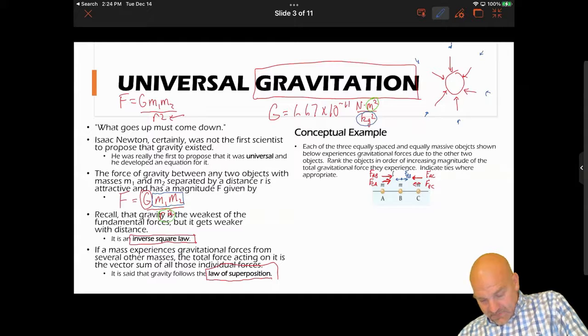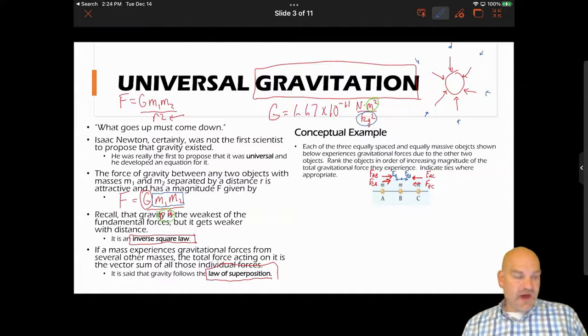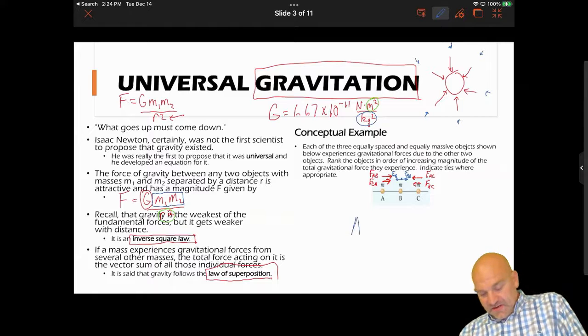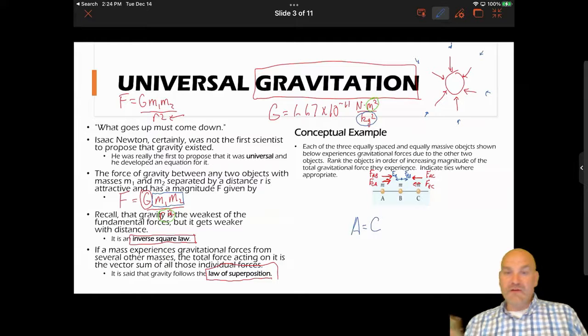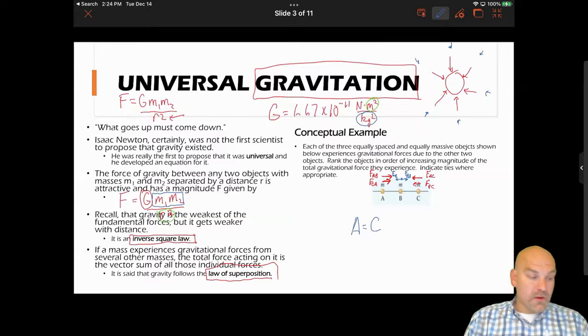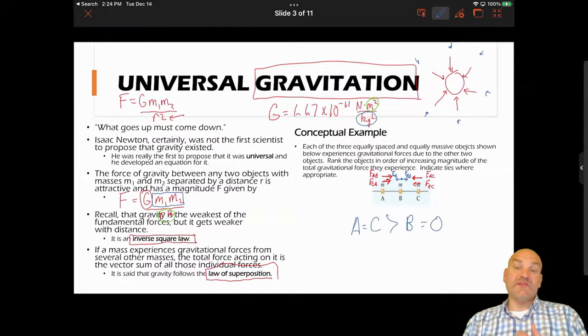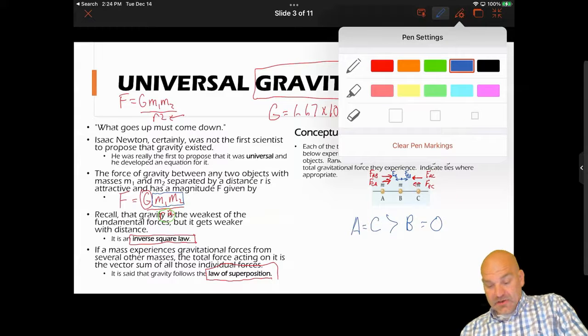So F of B on A, F of C on B, that's like positive negative. So if we look at it, A and C are going to have the same value, same magnitude, because they're experiencing essentially the same forces due to Newton's third law. And then that's going to be greater than B because in fact B is going to be experiencing zero force.